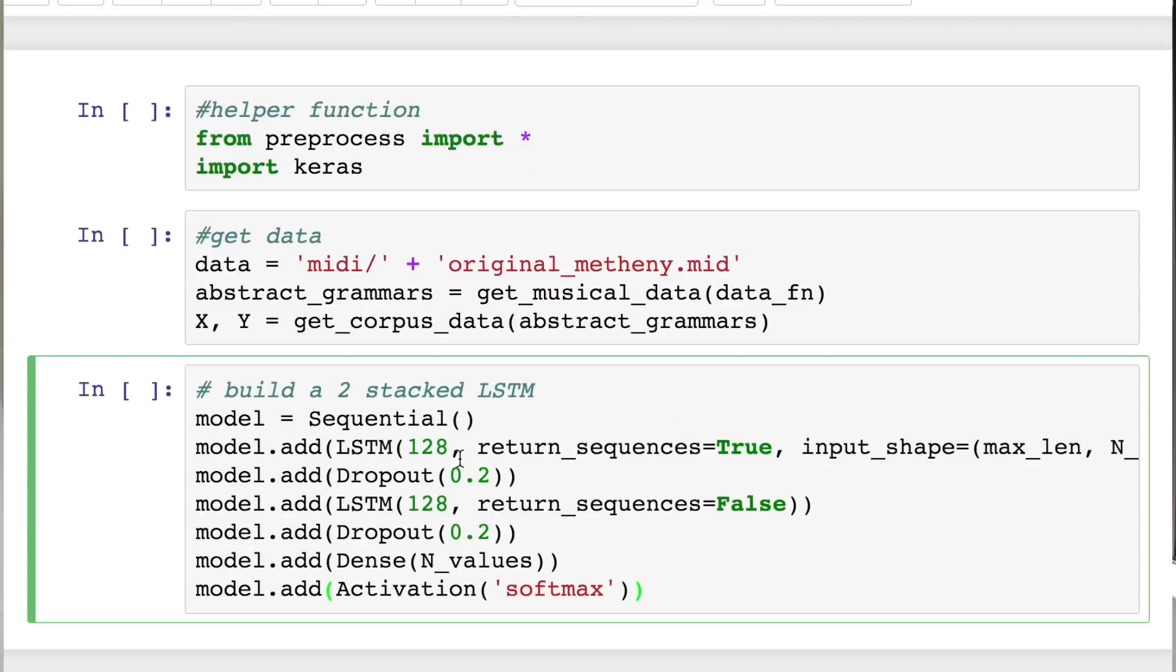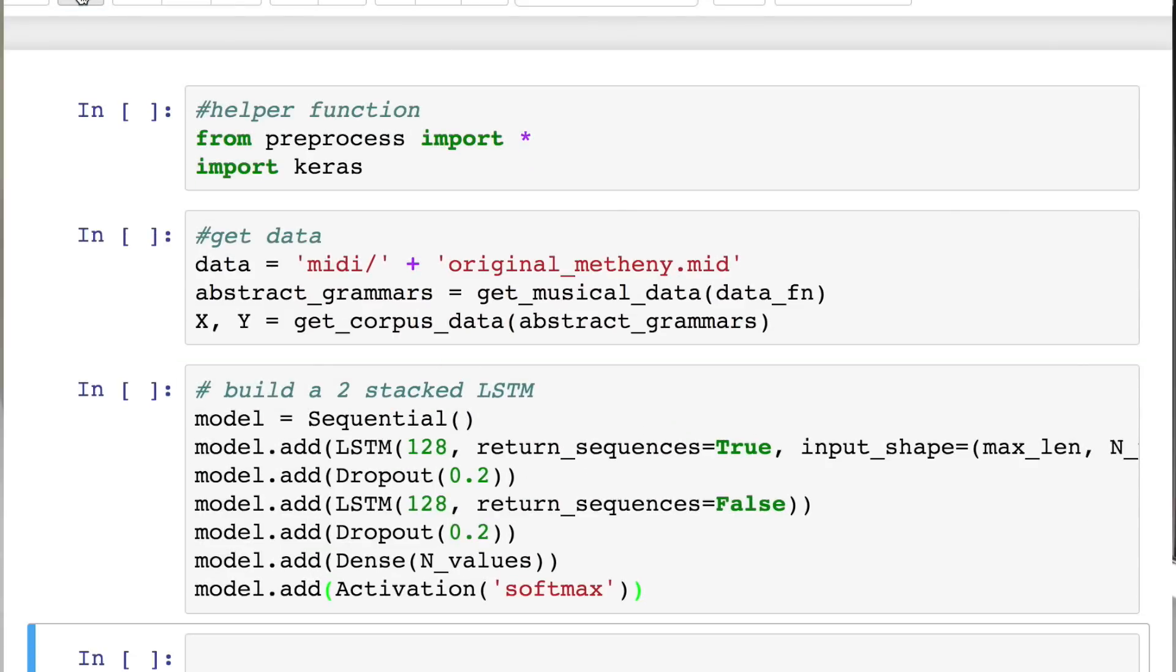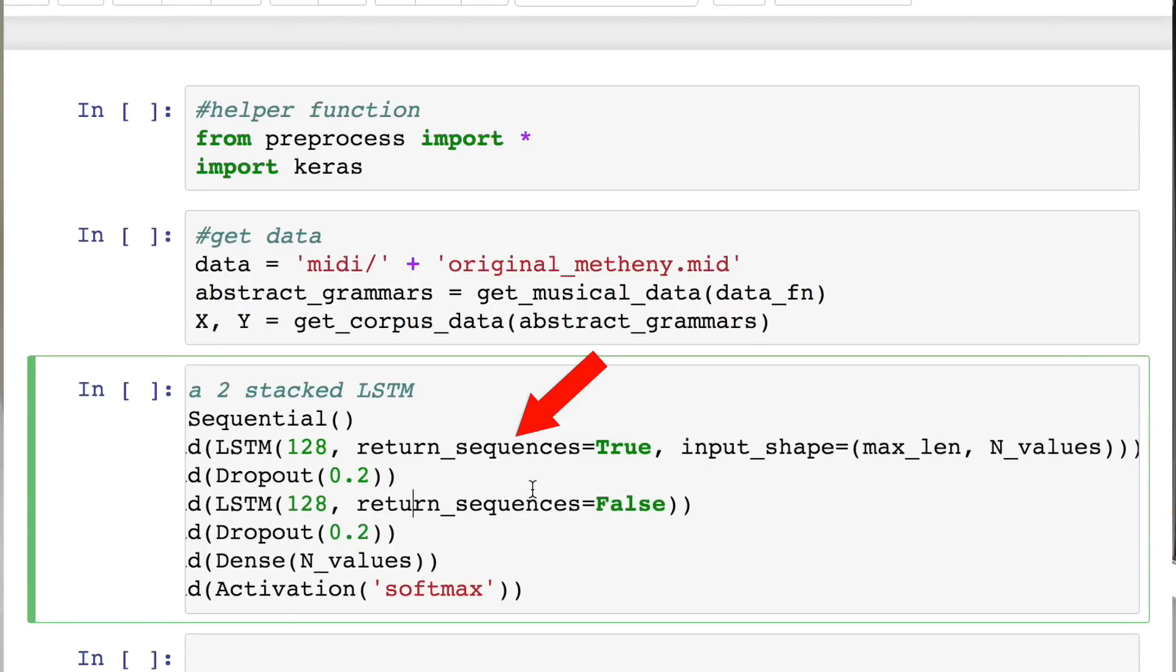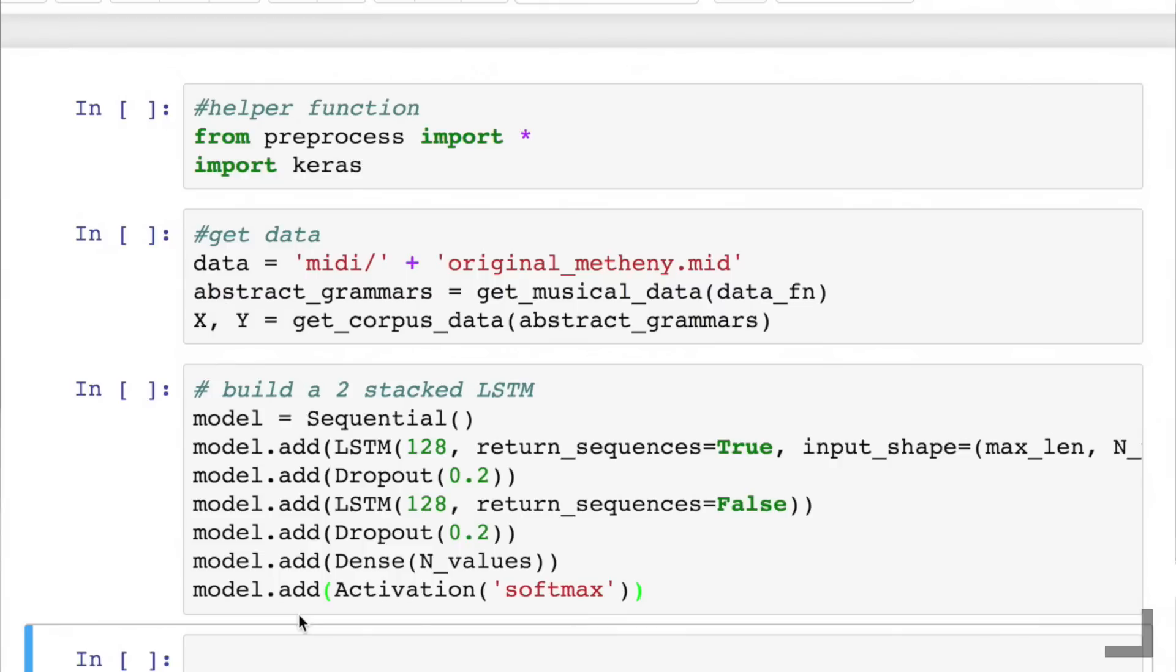When we build our first LSTM layer by default, it will only return the last vector rather than the entire sequence. So we set return sequences to true so that it returns the entire sequence, which is necessary to be able to stack another LSTM later on.